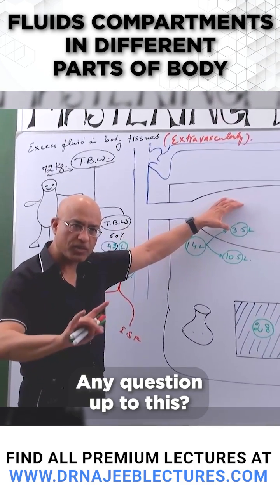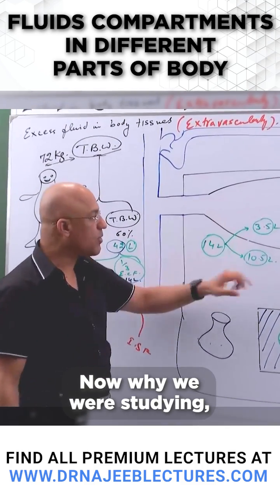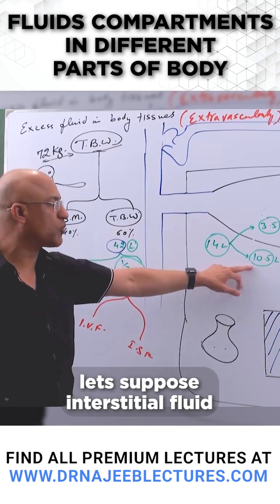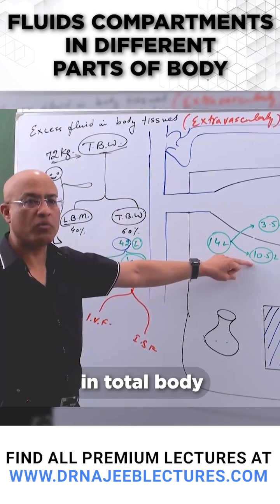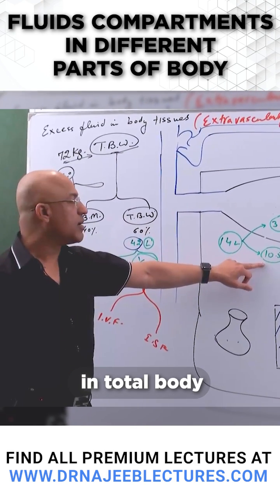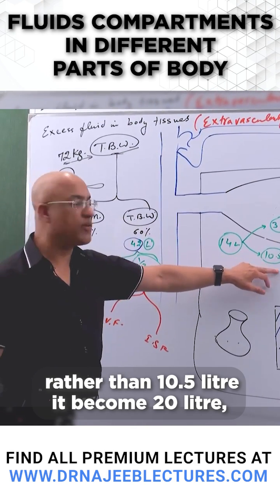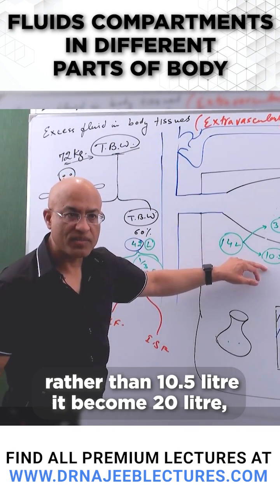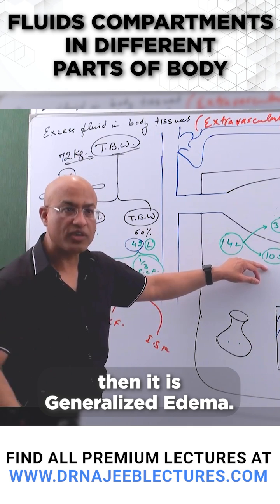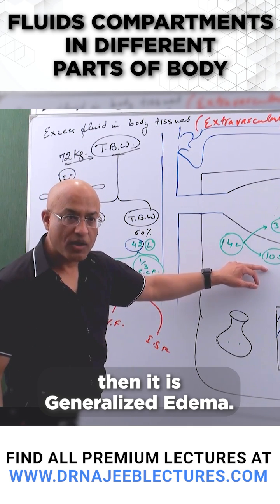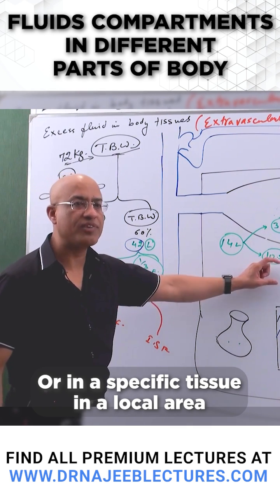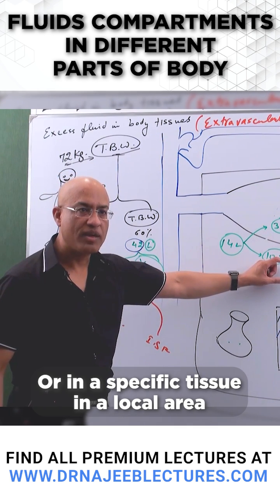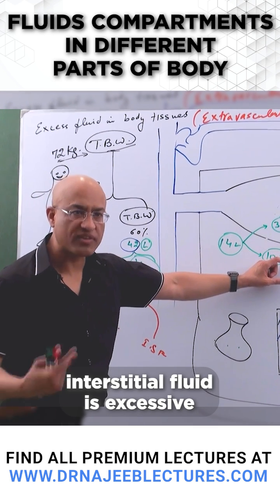Is it clear? Any questions up to this? Now, while studying, let's suppose interstitial fluid in total body, rather than the normal 10.5 liters, becomes 20 liters — then it is generalized edema. Or if in a specific tissue or local area the interstitial fluid is excessive, that is local edema.